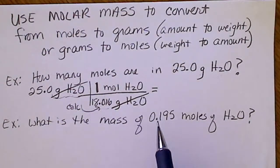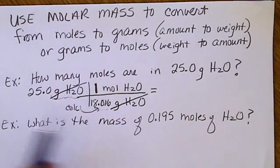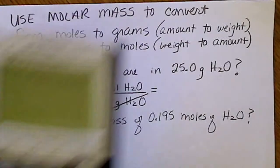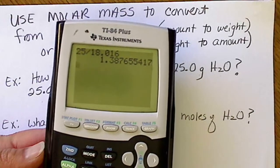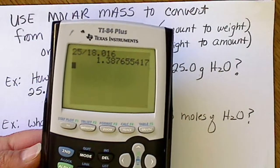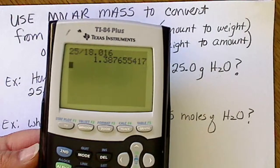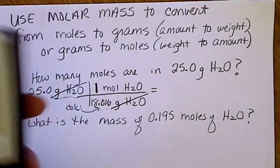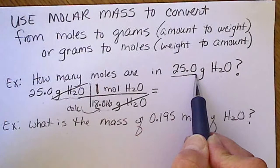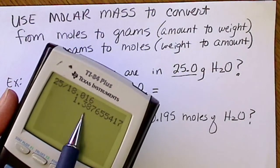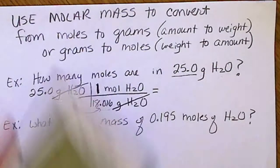So in the calculator, we're going to enter 25 and divide that by 18.016. And if we do that—18 divided by, I mean 25 divided by 18.016—we get this big long number. And we'll think of significant figures again, so we'll round this to three significant figures.